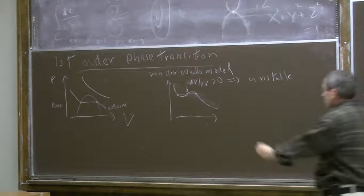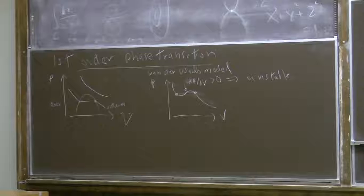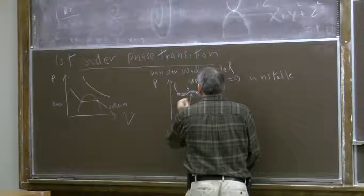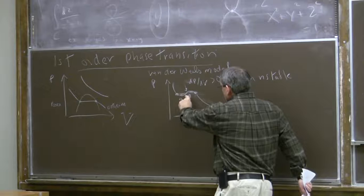What actually happens in those intermediate values of the volume is that there's coexistence between gas and liquid phases described by these two points. The way we determine the coexistence pressure given this isotherm predicted by our model is using Maxwell's equal area construction, so the area between the line of constant pressure and the isotherm — the area above the horizontal line matches the area below.